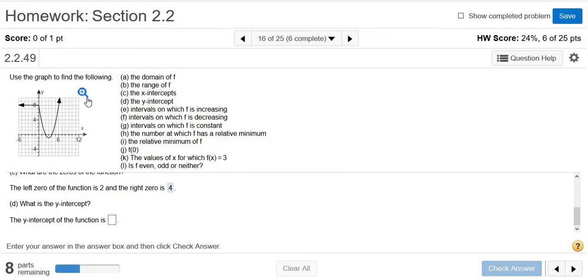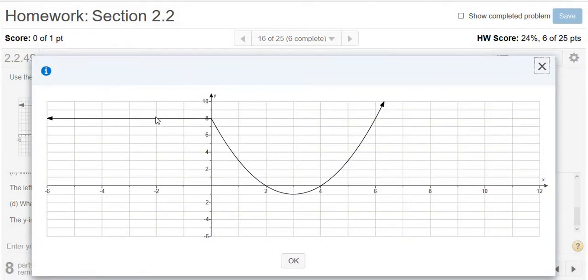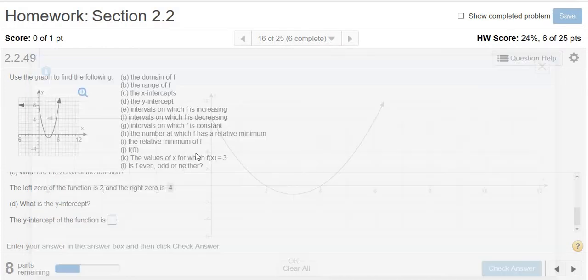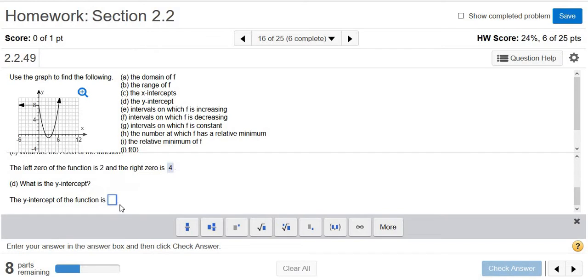What is the y-intercept? Let's click the little magnifying glass. The y-intercept is where it touches or crosses the y-axis, right here at 8. So 8 is the y-intercept.